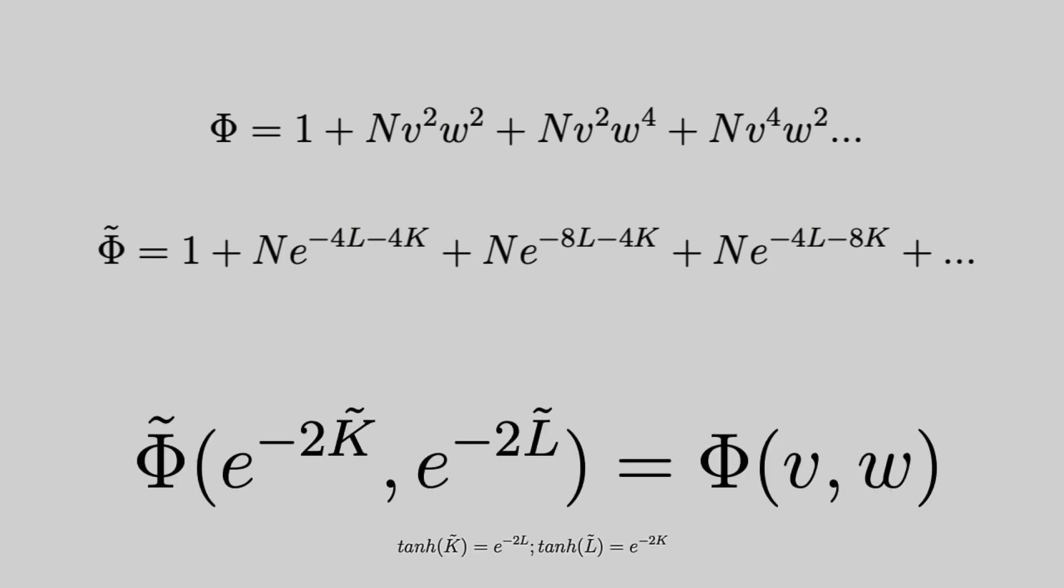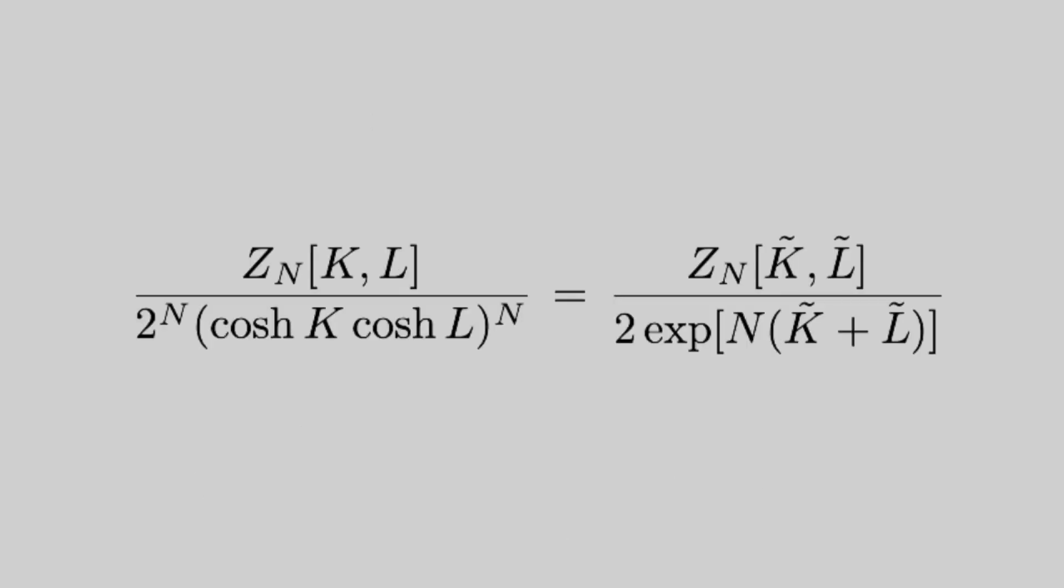So now with our appropriate K tilde and L tilde as a function of L and K, we can rewrite these sums in terms of the partition function. All of our work so far has led up to this equation here. Since the left hand side was derived as the high temperature expansion and the right as the low temperature expansion, this equation shows that there is a connection between the high and low temperature phases. This is the self duality.